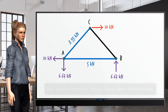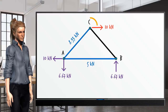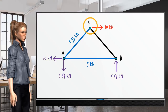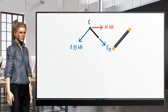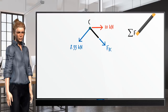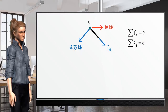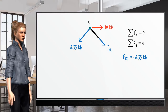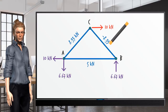Go to Step 2: Locate a joint with at most 2 unknown member forces. Draw its free body diagram. Write the two joint equilibrium equations and solve them for the unknown forces. Label the members with the calculated forces.